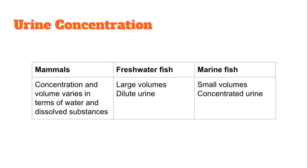Here we have a quick table that summarizes the difference in urine concentration between mammals, freshwater fish, and marine fish. Mammals vary their concentration and volume of urine depending on how much water their body requires and whether they need to reabsorb or secrete dissolved substances. Freshwater fish produce large volumes of dilute urine, while marine fish produce highly concentrated urine in small volumes.